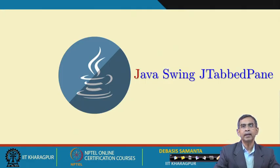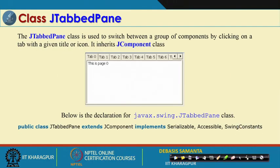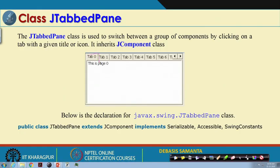JTabbedPane is a very essential component, also new and not in AWT. Within a frame, you can create many tabs. If you know Excel, at the bottom there are tabs corresponding to each sheet — Sheet 1, Sheet 2, Sheet 3. Similarly in JTabbedPane you can create tabs and rename them, for example Photo Album 1, Album 2, Album 3.